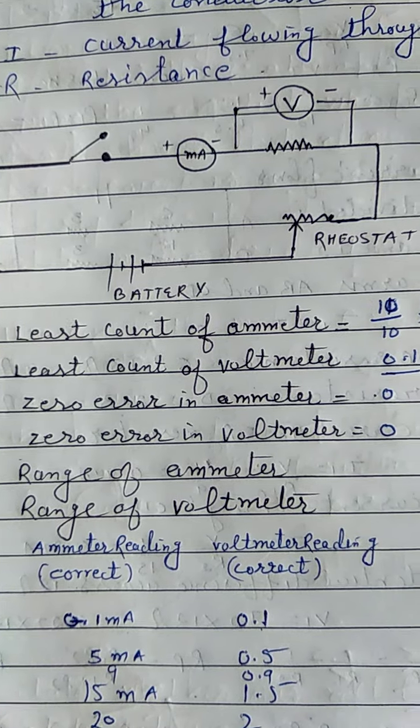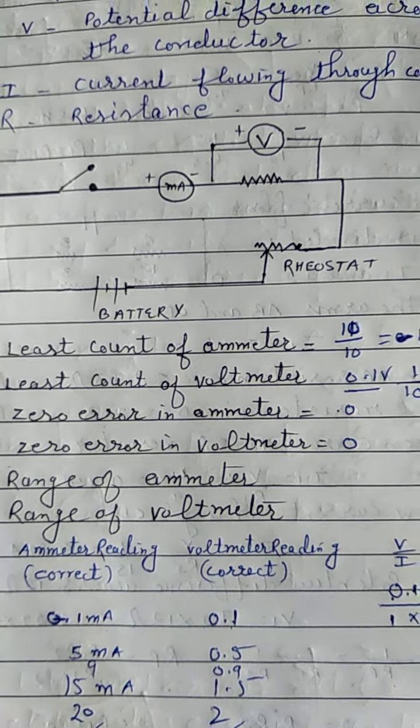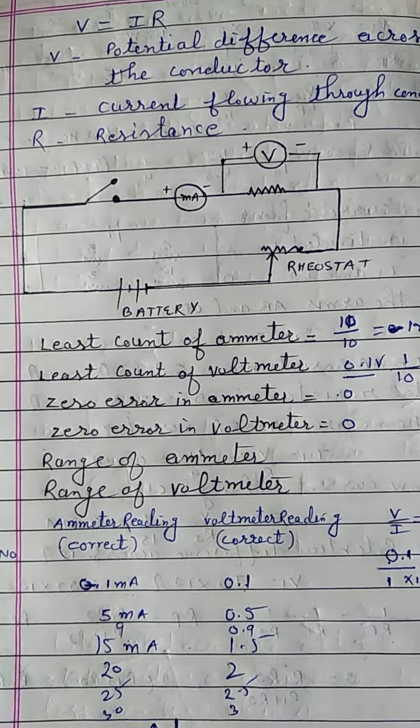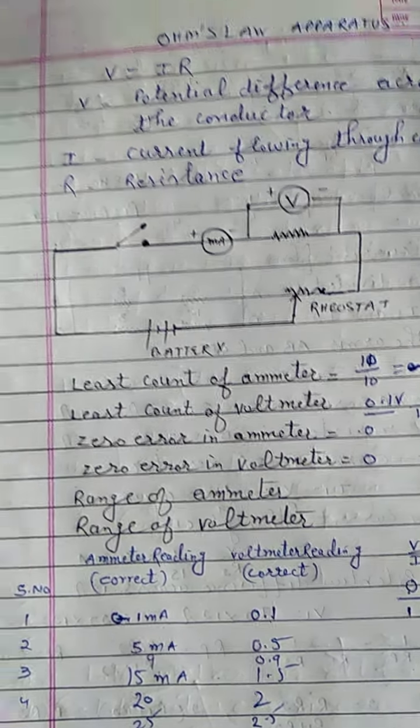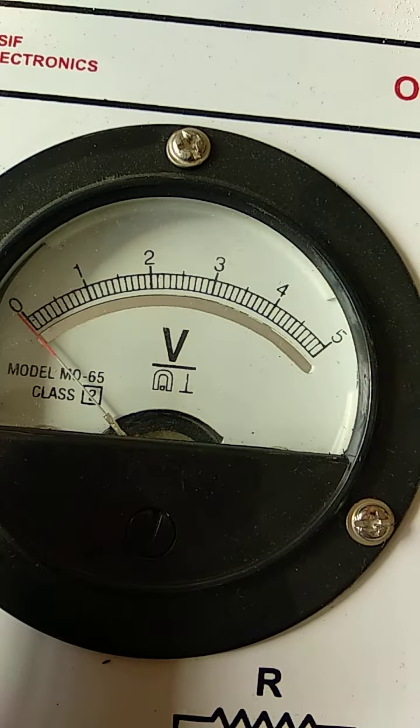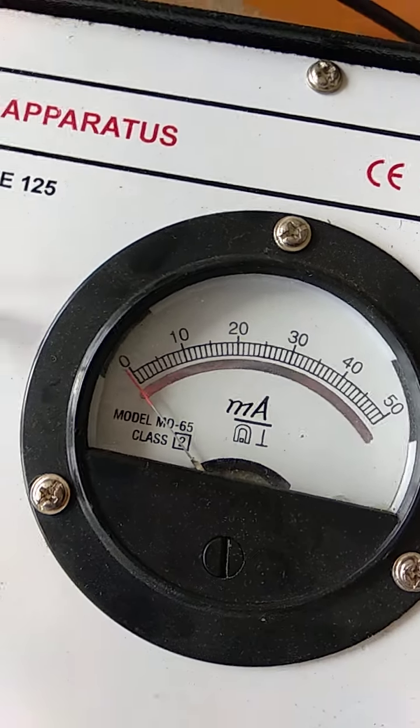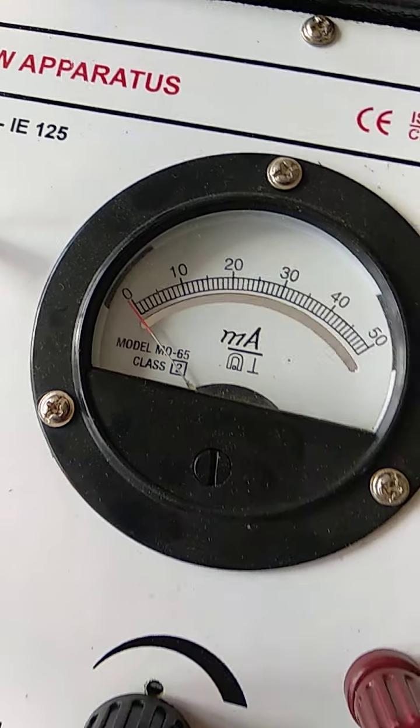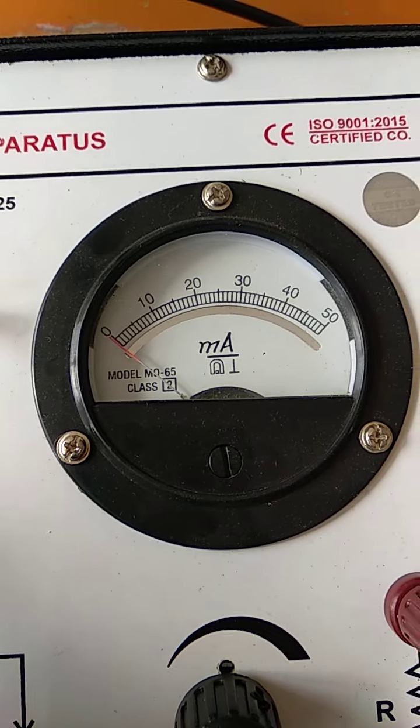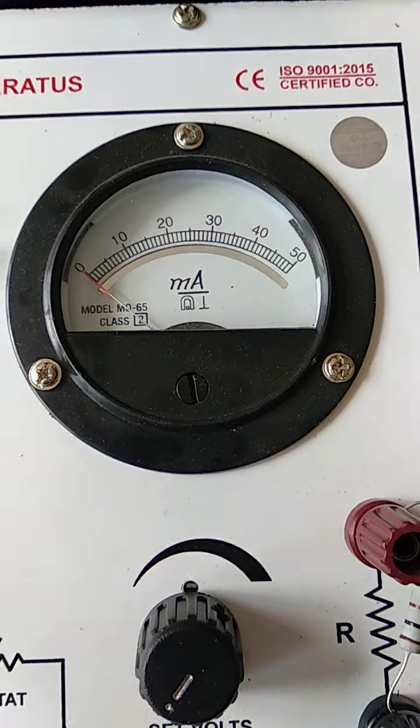And you can see here 0 error in the ammeter and 0 error in the voltmeter. What does error mean? If you see, if it was ahead of 0, then we would say there's a problem and we would subtract that error reading from the observed reading.